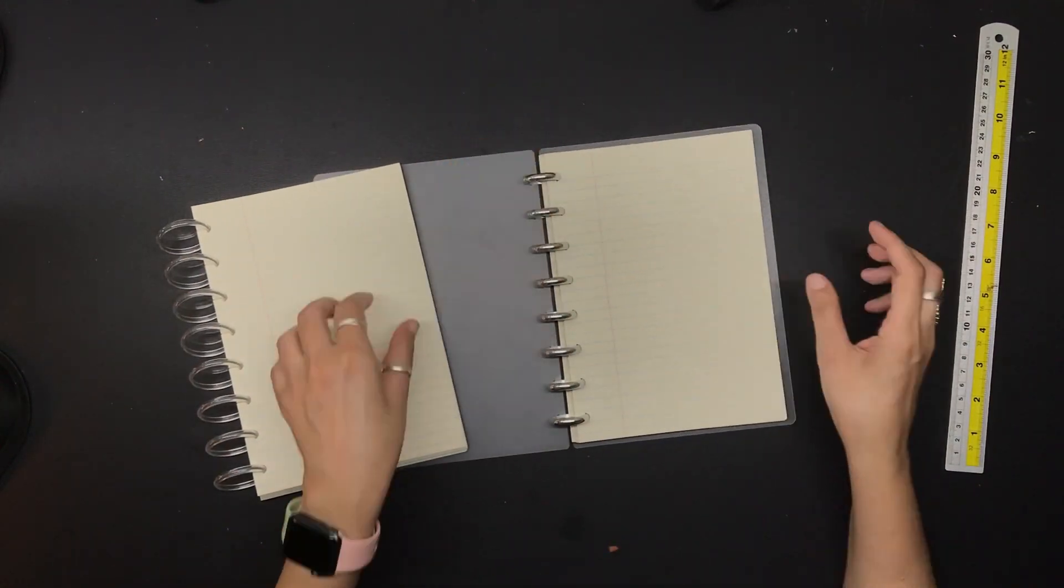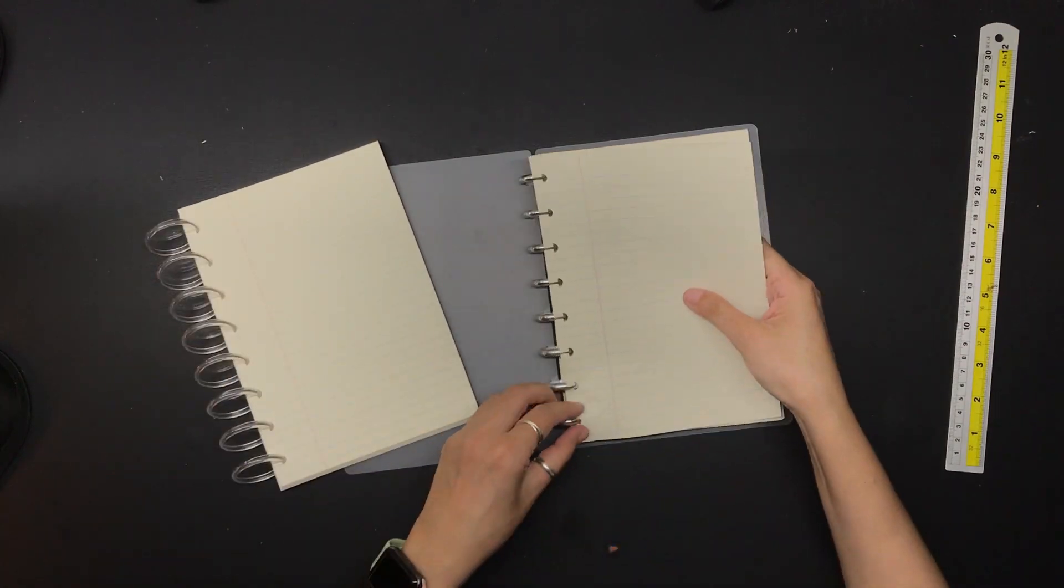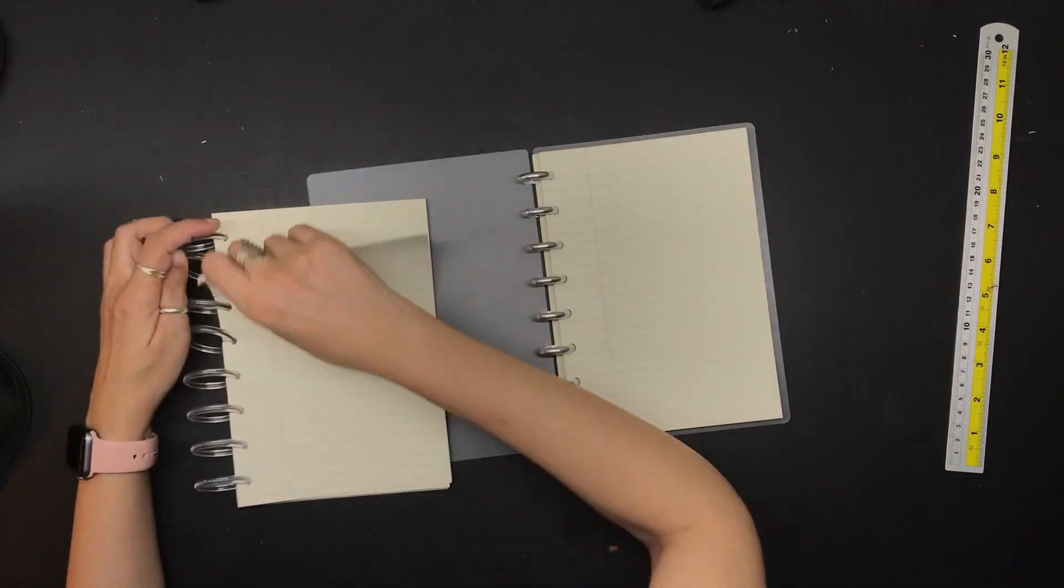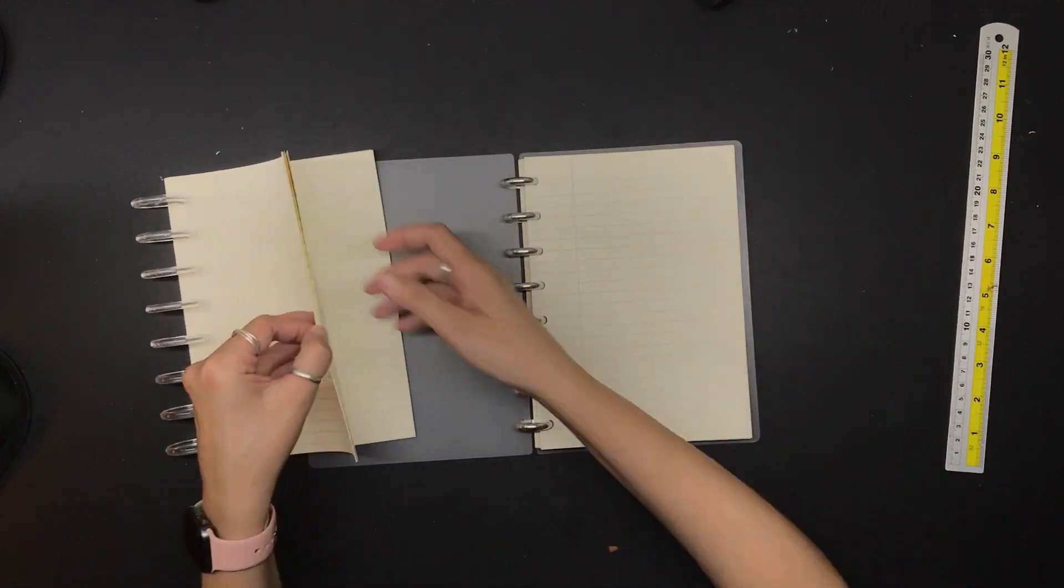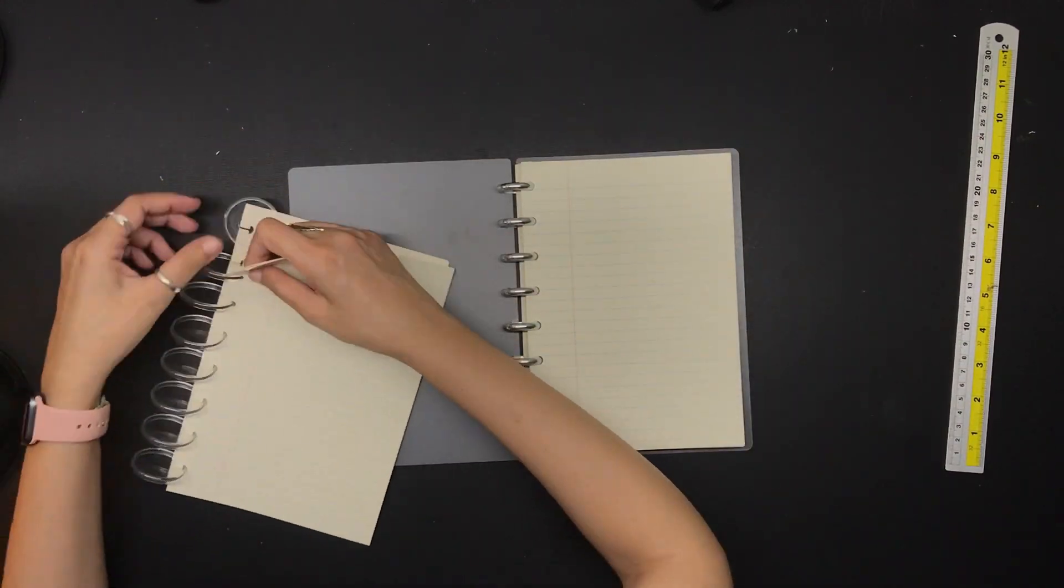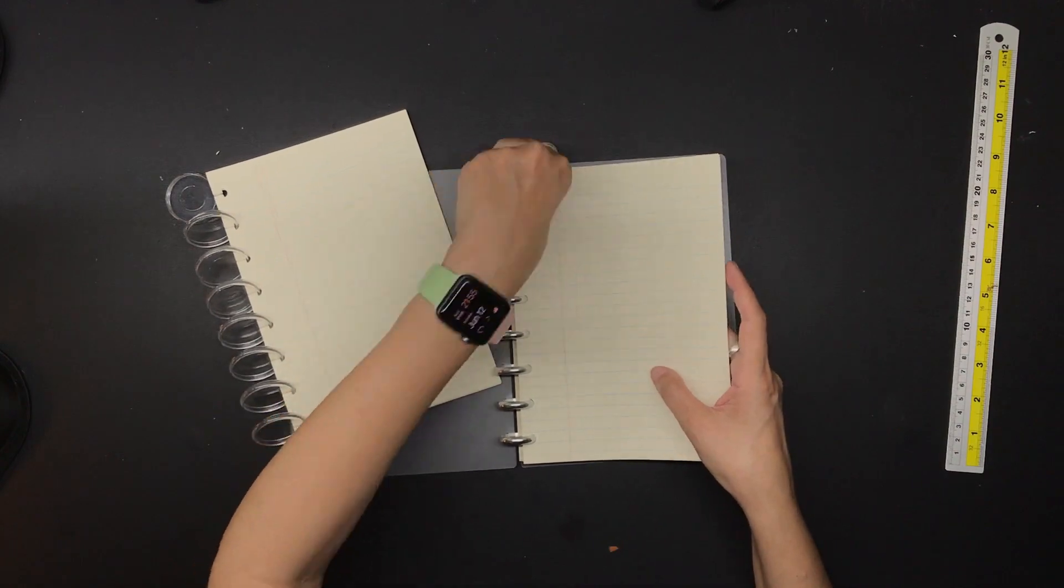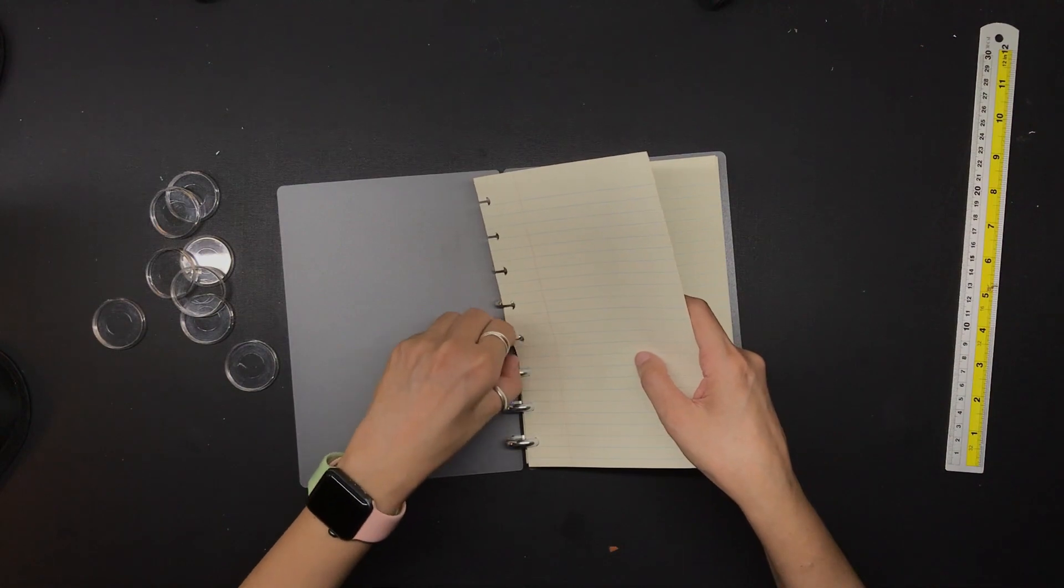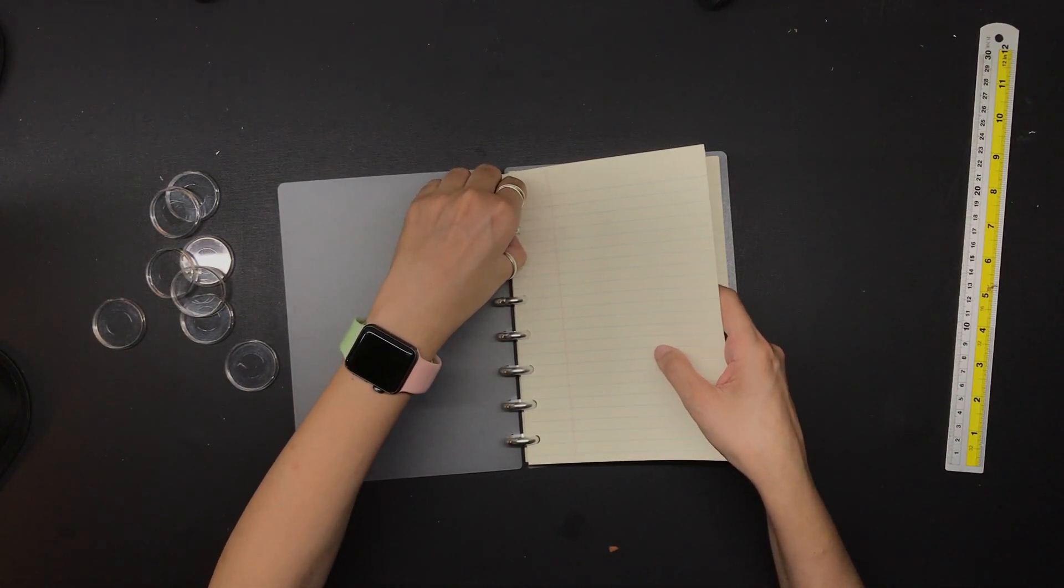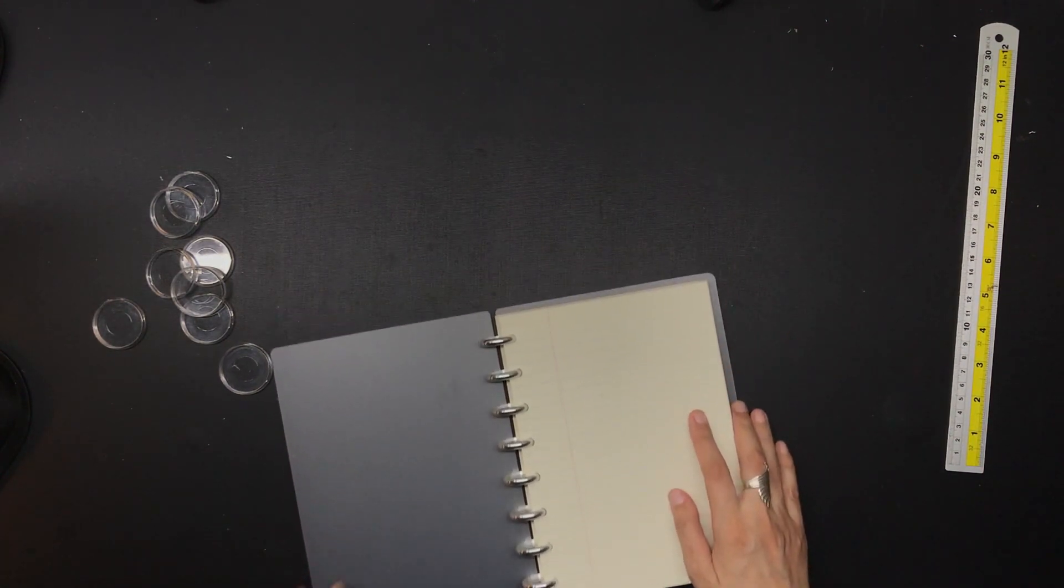I usually scan the notebook pages and then store them on my computer as well before shredding the original. So I will not be storing pages in this notebook for long, and therefore I will be able to get by with smaller discs. Smaller discs would also make the notebook more portable. This just makes sense to me.